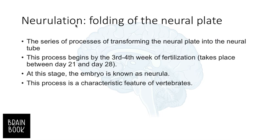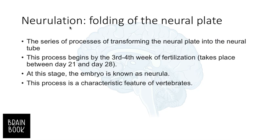After gastrulation we have a stage called neurulation. This neurulation stage involves folding of the neural plate. It contains a series of processes that transform the neural plate into the neural tube. Neurulation begins by the third and fourth week of fertilization, taking place between day 21 and day 28, and during this stage the embryo is called a neurula.